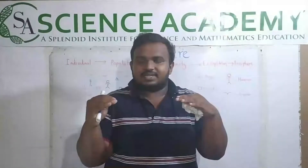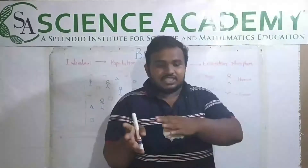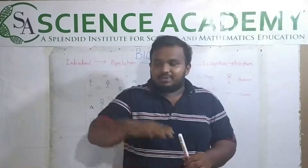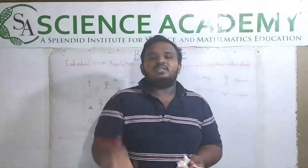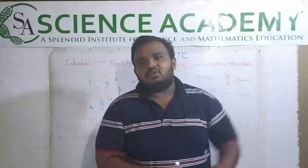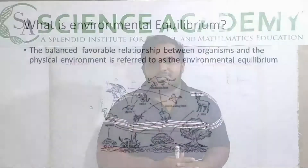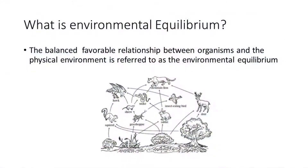Whatever animal is present on Earth, every organism on the Earth's surface is dependent on another. It is a chain — each organism is somewhere in the chain, maintaining the environment. It has an equilibrium built within it, which maintains the stability of the environment. We call it the environmental equilibrium. The balanced, favorable relationship between organisms and the physical environment is referred to as environmental equilibrium.